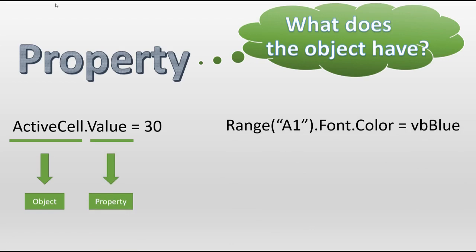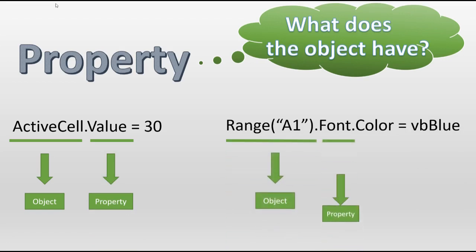In this more complex sample, Range is the object. Font is a property of the range because the range has a font. But color — color is a property of font, where font is the object for color but is a property for range.